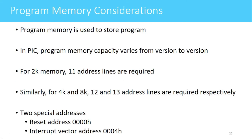Program memory is used to store the program or code. In PIC microcontrollers, program memory capacity varies by version — for 2 kilobytes, 11 address lines are required; for 4 kilobytes, 12 address lines; and for 8 kilobytes, 13 address lines. There are two special addresses in program memory. The first is the reset address at 0000h — whenever the CPU is reset, the program counter holds this address.